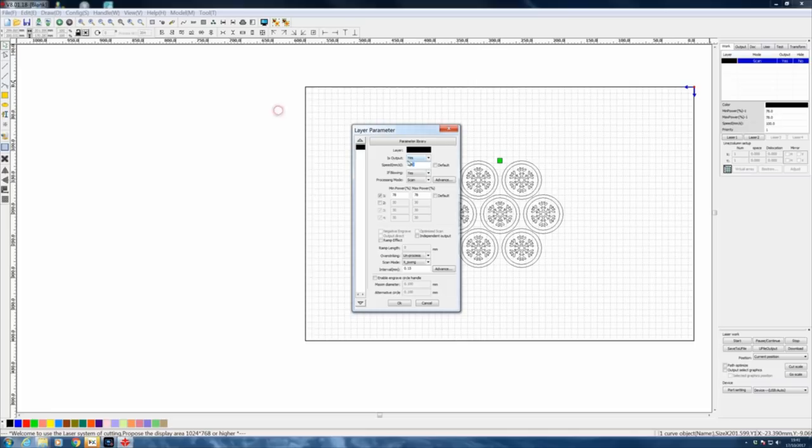Speed-wise we're going to have that up at around about 200 millimeters a second. Air blowing - well, this is an engraving process and I don't have air blowing for engraving, I turn it off, so it'll be no.